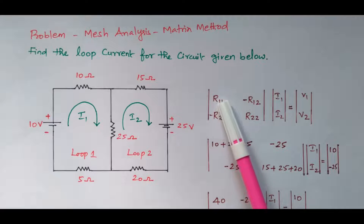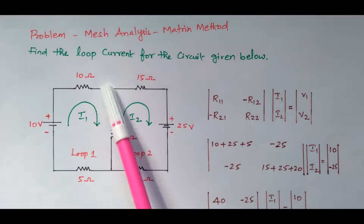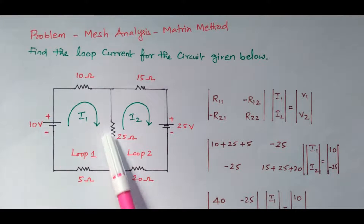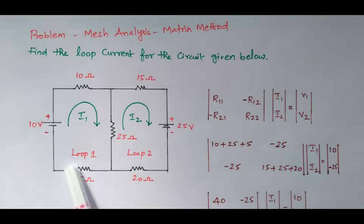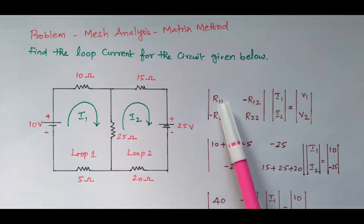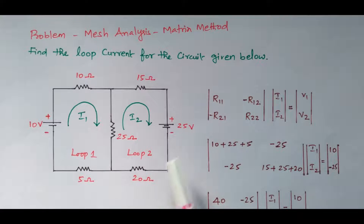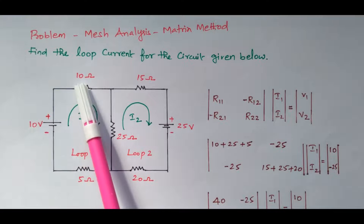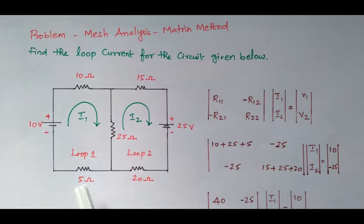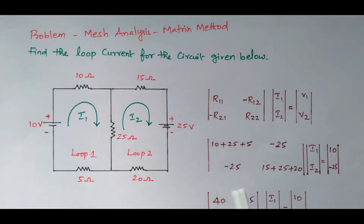R11 is nothing but the total resistance of loop one. In loop one, the resistors available are 10 ohm, 25 ohm, and 5 ohm. The sum of these three is R11. So R11 = 10 + 25 + 5, which is the sum of resistors available in the first loop.